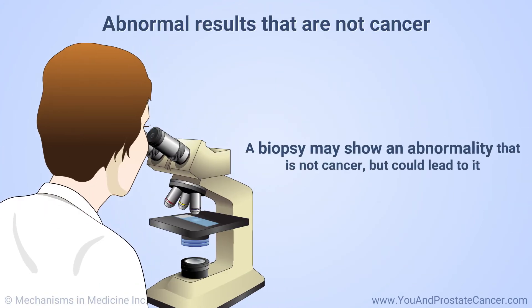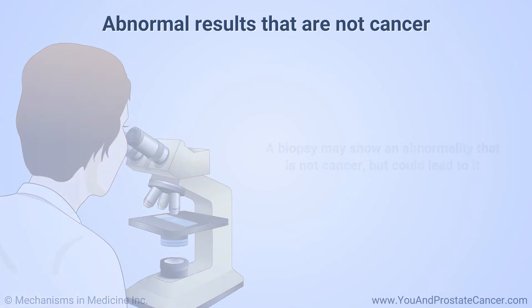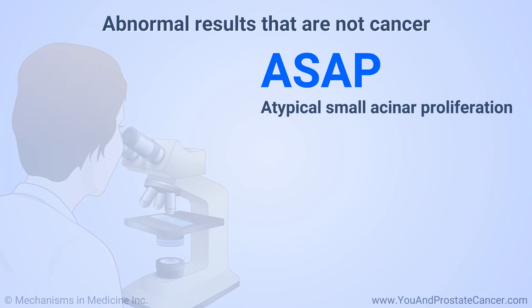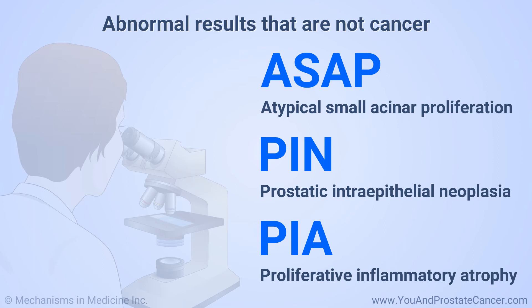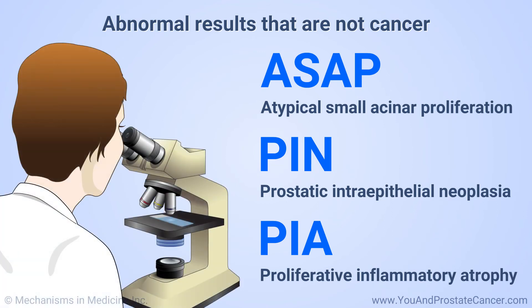A biopsy may show an abnormality that is not cancer but could lead to it. These abnormalities include a condition called atypical small acinar proliferation, or ASAP. Other conditions are called prostatic intraepithelial neoplasia, or PIN, and proliferative inflammatory atrophy, or PIA. If you have one of these, your doctor may want to watch for cancer and do more tests later.